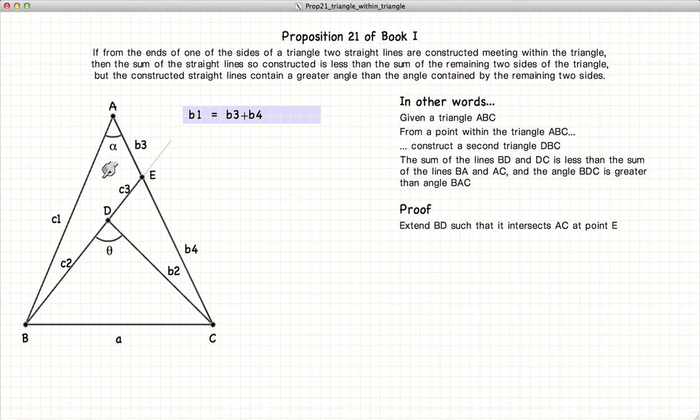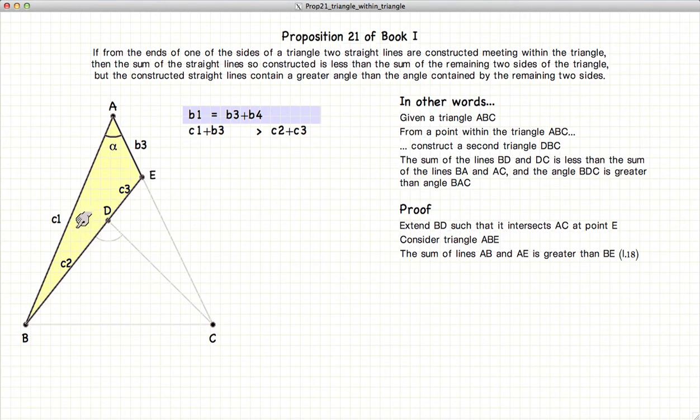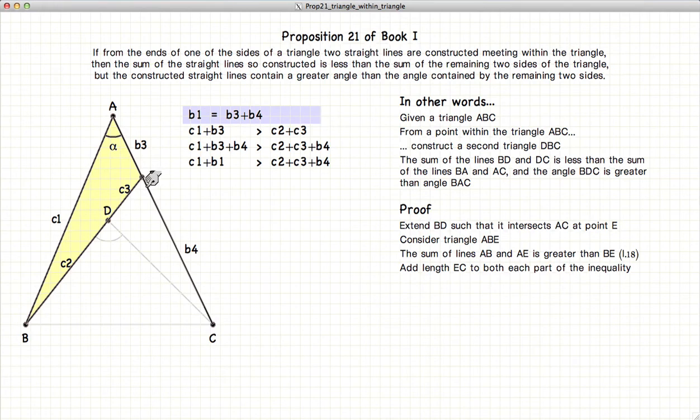So now let's look at this triangle. We have, by Proposition 18, that C1 plus C3 is going to be larger than the third line of the triangle, which is C2 plus C3. If we add the line EC to both sides of the equation,